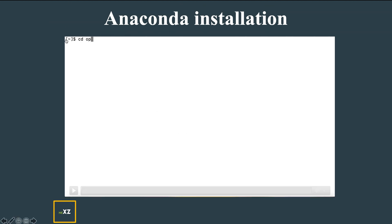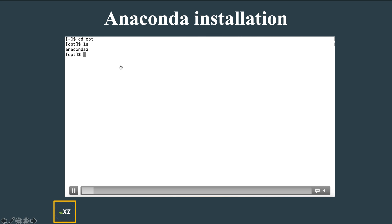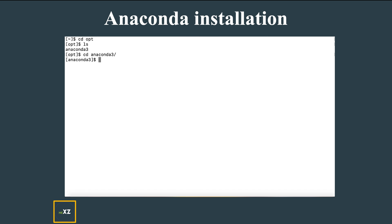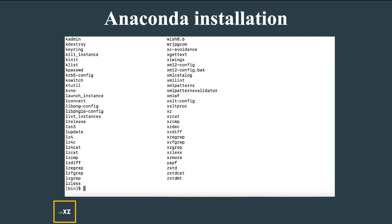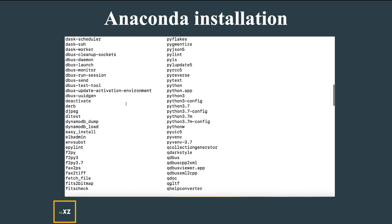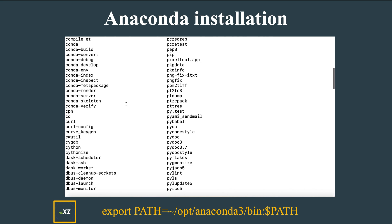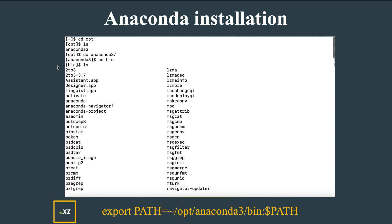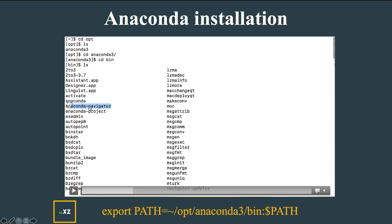This is the home directory in my system. I change directory to opt and list its contents. I go into anaconda3 and then into the bin folder. Pressing ls to list the contents, you can see that anaconda-navigator is installed there.